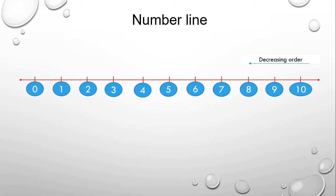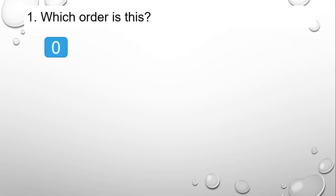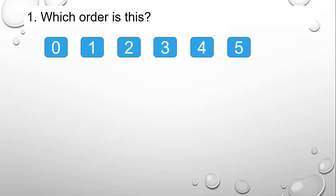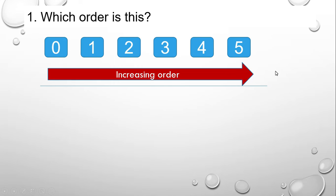Now let's look at these numbers: we have 0, 1, 2, 3, 4, and 5. We need to know which order this is. Remember, we are beginning from 0 moving up to 5. You see, 0 is small and 5 is big, so we call this the increasing order.